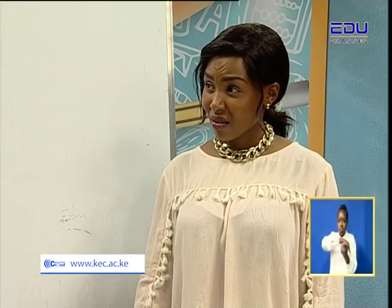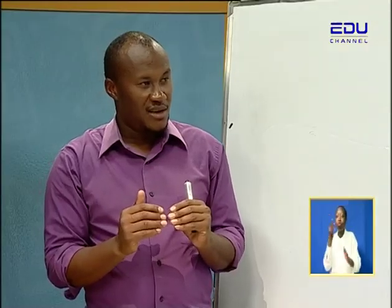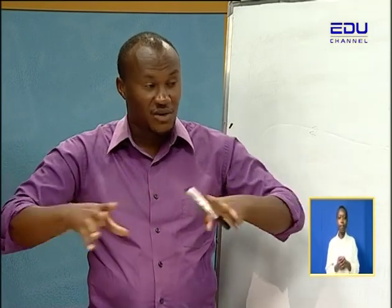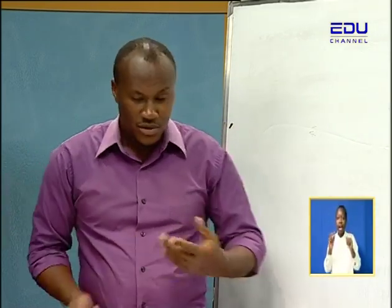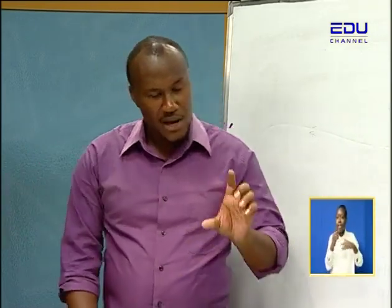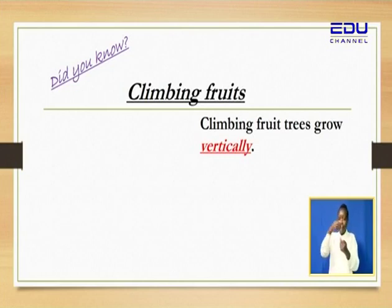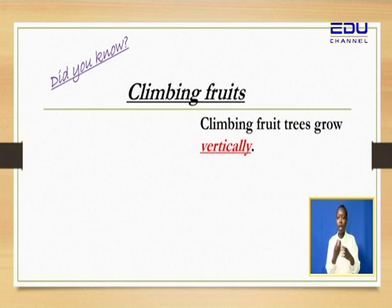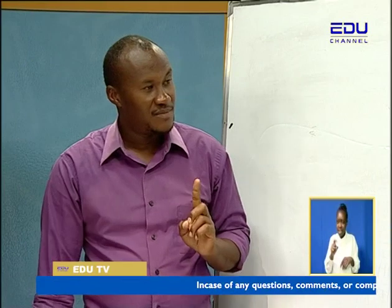Vines, maybe? I'll give you examples of these fruits and you're going to see. Of course, because they are fruits you have found in the environment. So we can start by saying climbing fruit trees grow vertically. When we talk about growing vertically, they grow upwards, from the ground up, straight. But they must be trained.